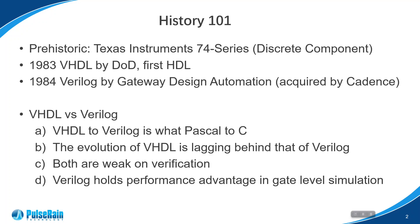Here is the history lesson 101 for HDL and HVL. In the beginning of time, when digital circuits started to emerge, everything was hand-crafted. A typical example of such design practice is the ubiquitous presence of Texas Instruments 74-series IC back then. At that time, a large digital circuit was usually composed of multiple discrete ICs, like NAND gate, NOR gate, flip-flops, etc., and the whole system was often bulky and slow.